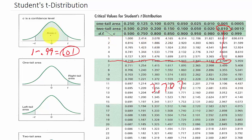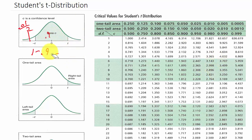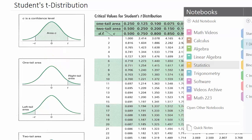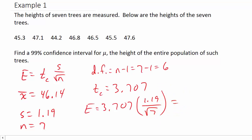Looking at the picture, the middle area is 0.99 and the two tails together are 0.01 — so each tail is 0.01 over 2. The confidence interval is two-tailed, so we look at the two-tail area. Now plugging into the formula: E equals 3.707 times S (1.19) over the square root of N (7), which gives us 1.67, rounded to two decimal places.